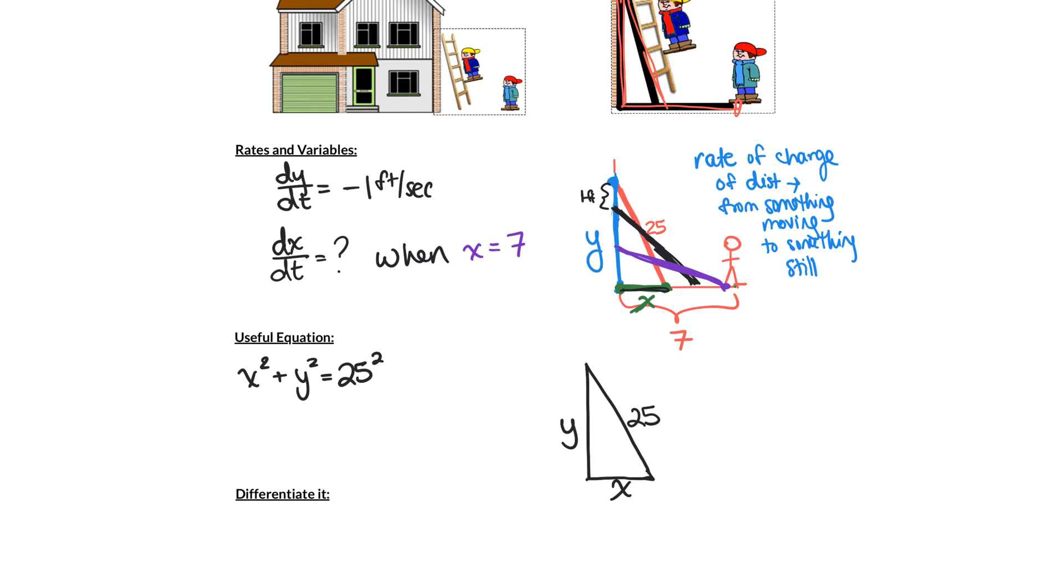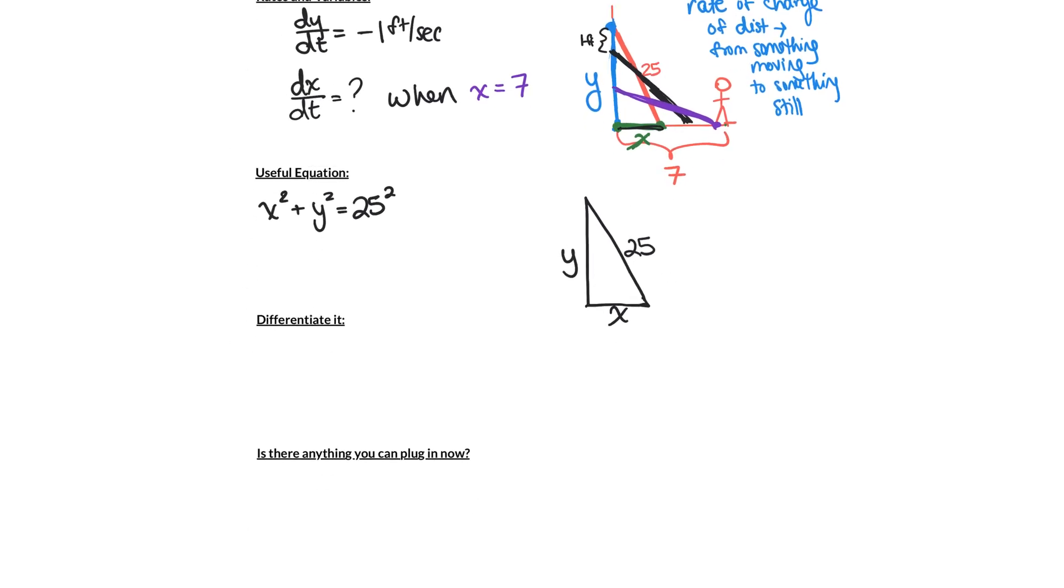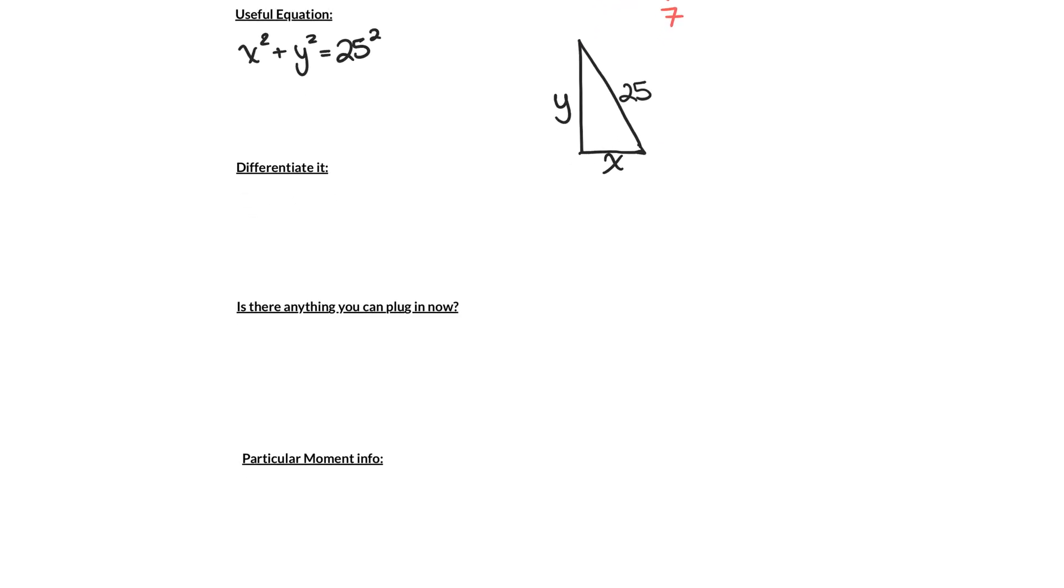And the next step is to differentiate. So we want to differentiate our equation x² + y² = 25². But we have to differentiate implicitly.